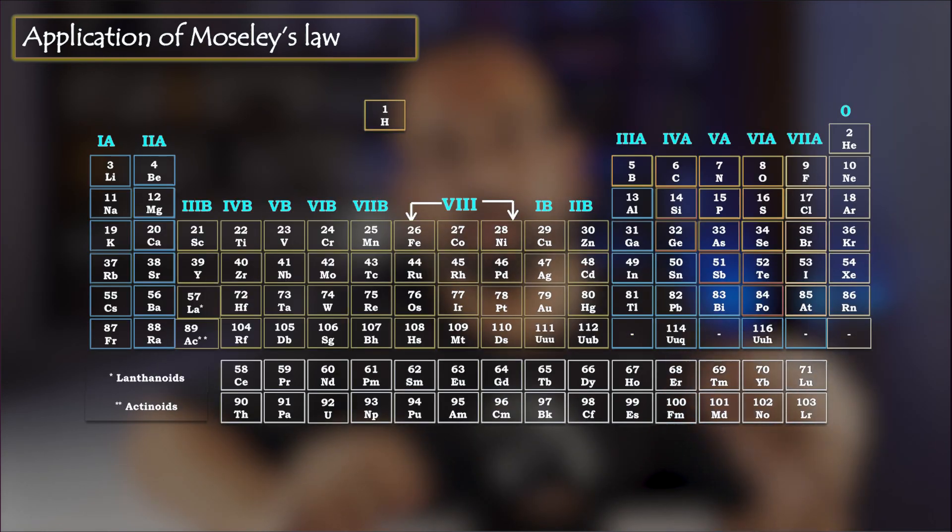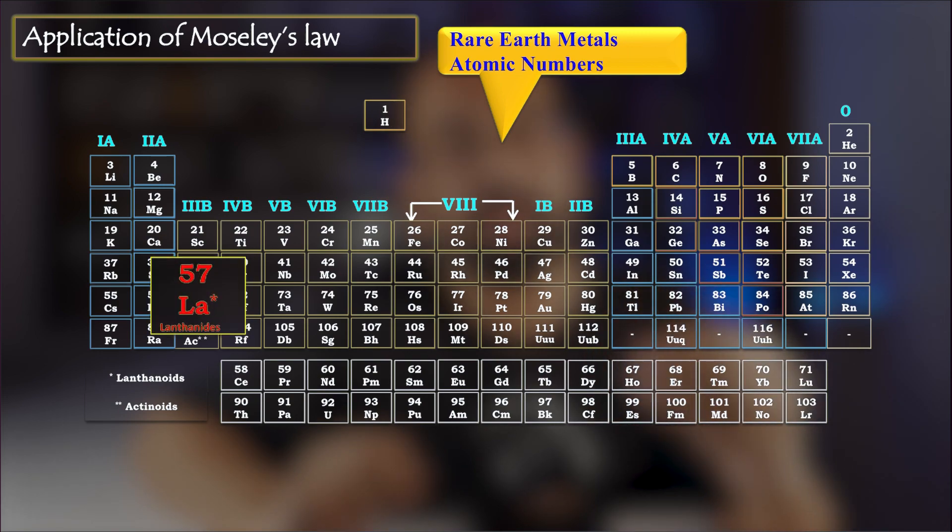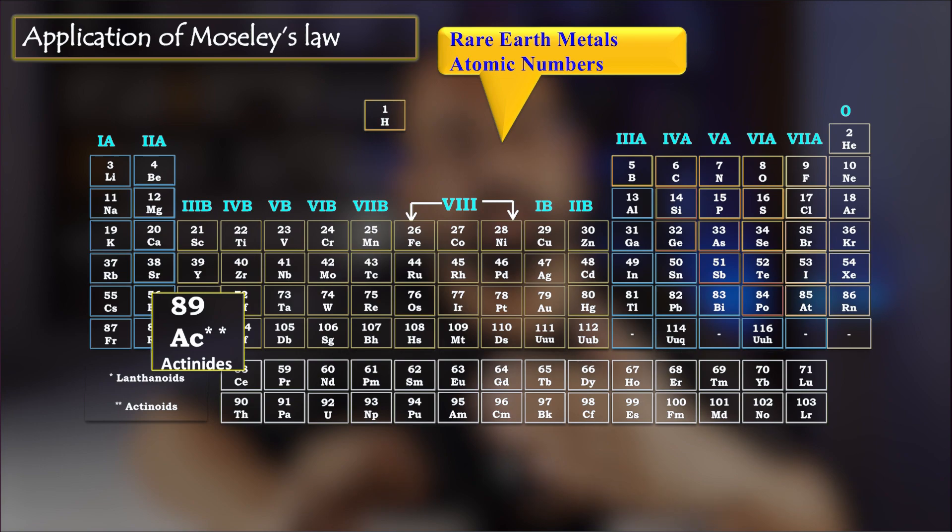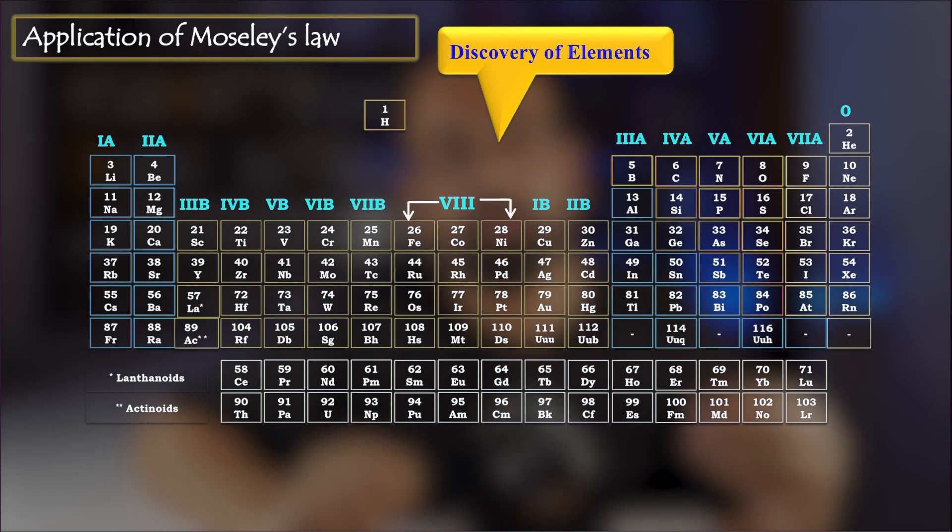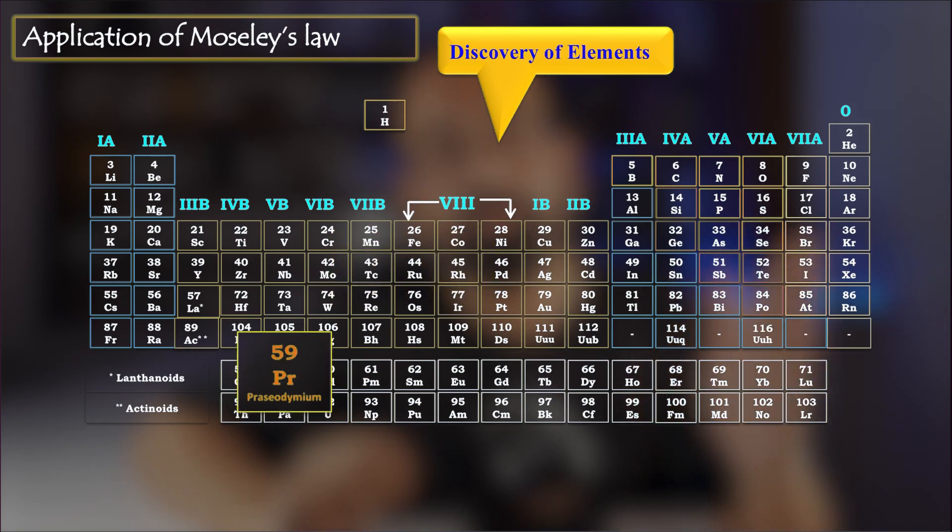By studying the characteristic X-rays of the rare earth, by finding out the frequency of those characteristic X-rays, then the atomic number of the rare earth lanthanides and actinides were calculated. Moseley's law also helped to discover many new elements such as technetium, rhodium, praseodymium and others.